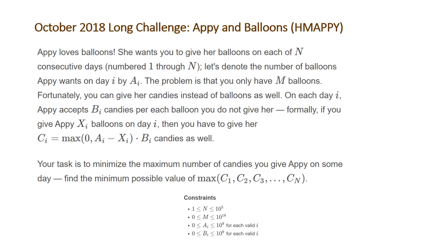Your task is to minimize the maximum number of candies you have to give Appy on some day — find the minimum possible value of the maximum number of candies you give her across all days.